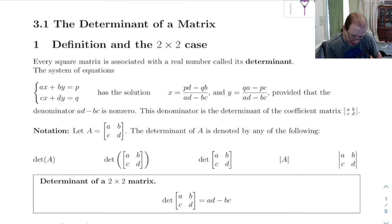So the coefficient matrix over here would be a, b, c, d and the ad minus bc is the determinant. Notice in order for a unique solution to exist, that can't be zero.